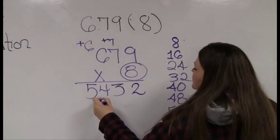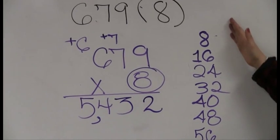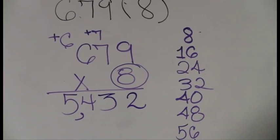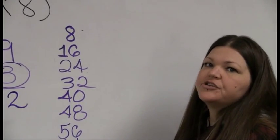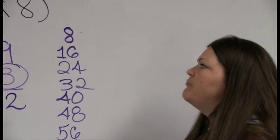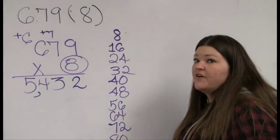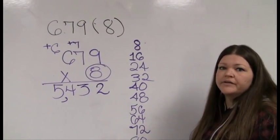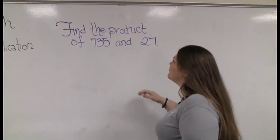So my answer to 679 times 8 is 5,432. Was it slower to do it this way? Absolutely. Would I rather you had your times tables memorized? Yeah, for sure. But if people tell me they can't memorize them, I say that's fine — there's the long way. Now let's do a slightly harder problem.